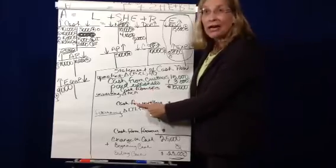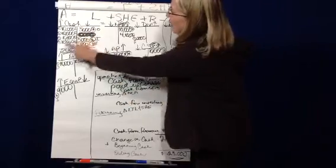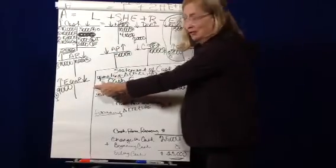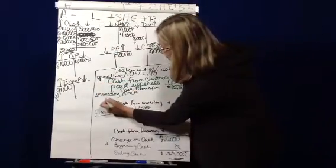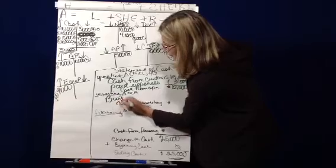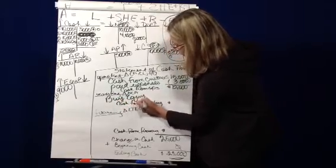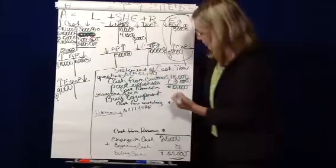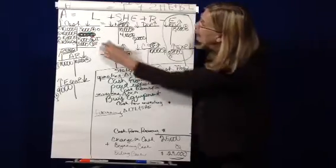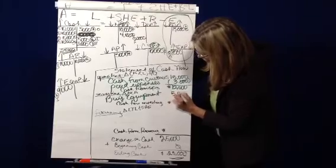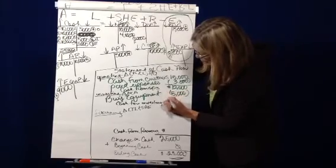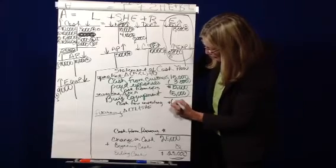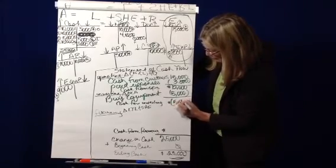The next thing we're going to look at is investing. And I see that I have one I, and the investing has to do with when I purchased equipment. So I buy equipment, and my cash went down by $5,000 when I purchased equipment. So I'm going to put that in brackets. So my cash from investing is a decrease of $5,000.